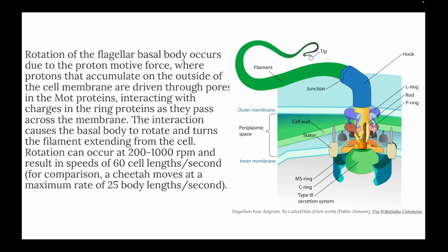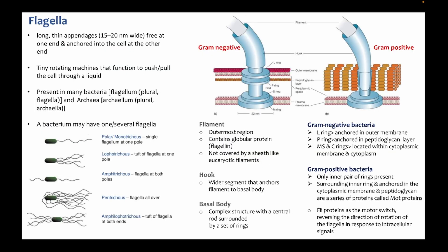Compared to a cheetah's 25 body lengths per second, bacteria swim very fast. Bacteria sense their environment through chemical senses, and since bacteria exist in millions, even if a few die, the rest continue to survive and propagate the DNA. Gram-negative bacteria have two extra rings to hold the flagellum within the outer membrane, compared to gram-positive bacteria.